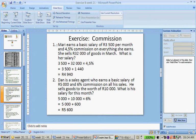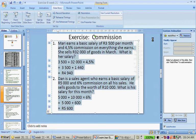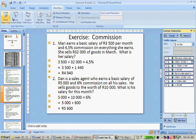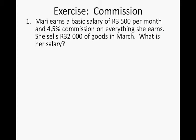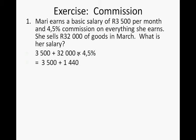Marie earns a basic salary of $3,500 a month and 4.5% commission on everything she sells. She sells $32,000 of goods in March — what is her salary? The basic salary is $3,500, and then she earns 4.5% of $32,000 worth of sales. You do $32,000 multiplied by 4.5, divided by 100, or use the percentage button on your calculator. She earned $4,940 in commission.